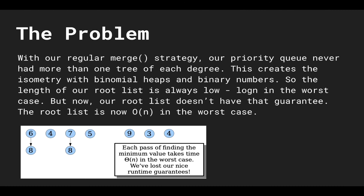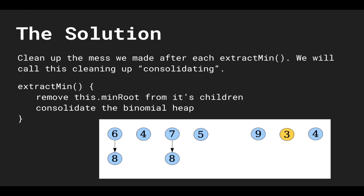The solution is: we still want lazy merging, but we want extract min to stay logarithmic. So we clean up the mess we make — called consolidating — every time we extract the minimum root from the root list. Here's the new definition of extract min in pseudocode: first, remove minRoot from its children and cut all pointers from its children. Then, instead of lazily merging the children with the existing heap, we actually consolidate the binomial heap and clean up the mess from prior merges and enqueues.